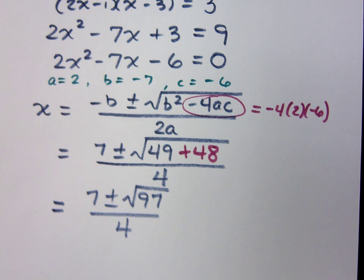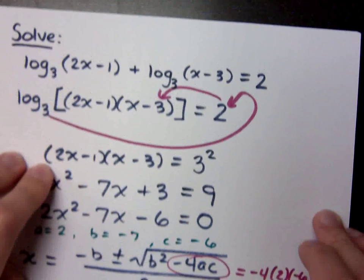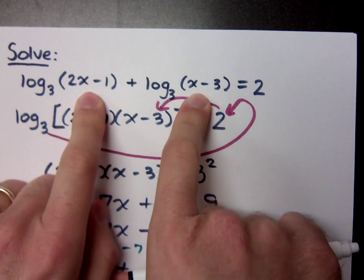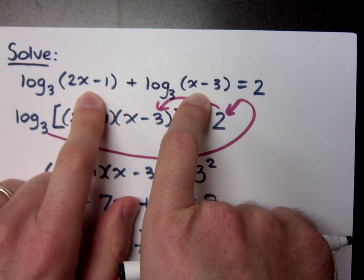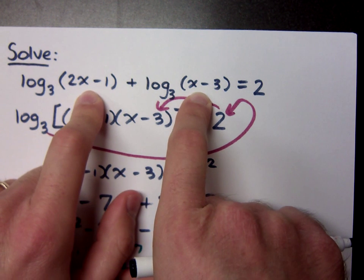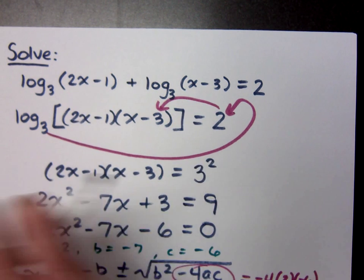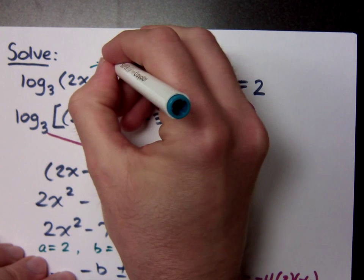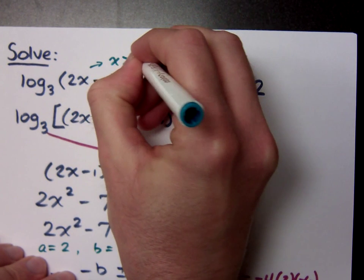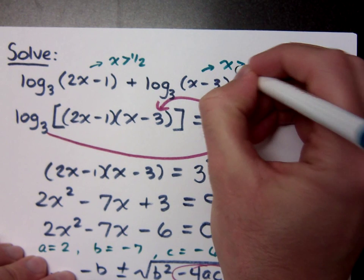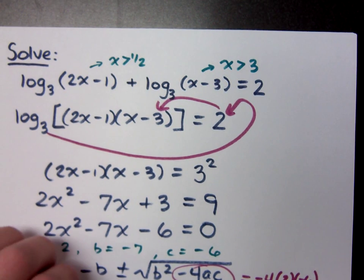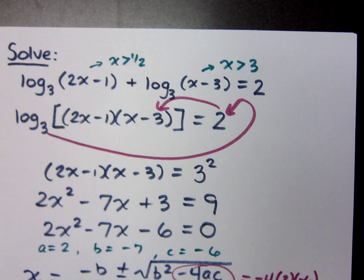No, it doesn't. Oh, because one would work and one won't. Well, sometimes we get two answers that work, but look at these guys. We have restrictions on what x can be. Remember that the insides of a logarithmic function, a logarithmic expression, have to be greater than 0. That means that for this guy right here, x must be greater than 1 half, and for this, x must be greater than 3. Which of these is more restrictive, being greater than 1 half or being greater than 3? Greater than 3 is more restrictive, right? So, we need to see what happens with my answers down below.